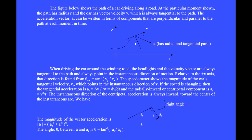At this particular moment, the path has radius r and the car has velocity vector v. The acceleration vector a can be written in terms of components that are perpendicular and parallel to the path at each moment in time. Relative to the plus x axis, the direction of travel is found from theta sub car equals tan inverse of v sub y divided by v sub x.